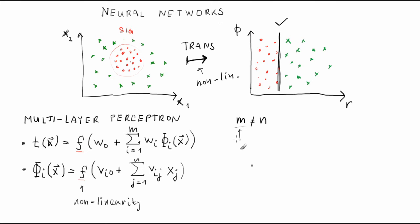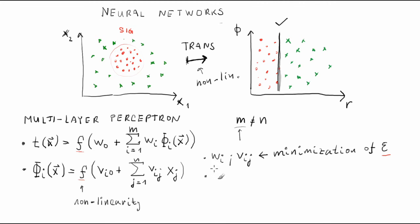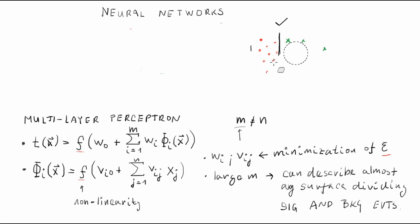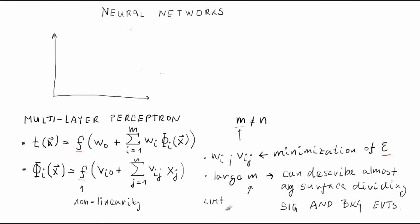The choice of number of transformed variables is a delicate question. The parameters w_i and v_{ij} are all determined simultaneously by minimization of the error function, defined in exactly the same way as for the single layer perceptron. With the non-linear transformation and a sufficiently large number of transformed variables phi_i, the neural network can describe fairly complicated shapes of the hypersurface defining signal and background-like regions. There is a theorem stating that such a network can describe any function with any desired precision. In practice, one cannot afford too many phi_i, as this requires an extremely large Monte Carlo training sample.